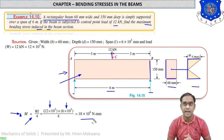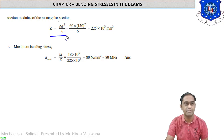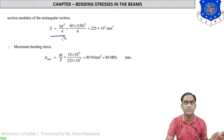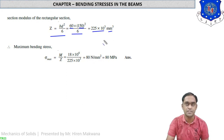Now calculate section modulus. For rectangular section, Z = bd²/6. Here B = 60 mm and depth D = 150 mm. So Z = (60 × 150²) / 6 = 225 × 10³ mm³. This is the section modulus for the given rectangular beam.